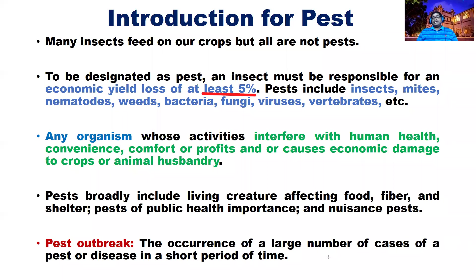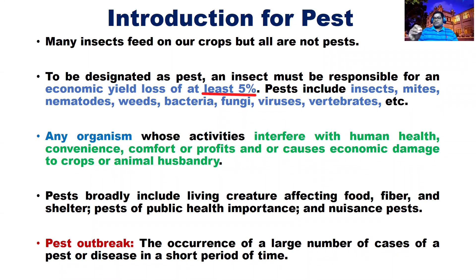A pest outbreak means the occurrence of a large number of pest or disease cases in a short period. An organism is considered a pest when it causes more than five percent yield loss. Pest outbreak means pests causing large numbers of frequent damages in an area consecutively.